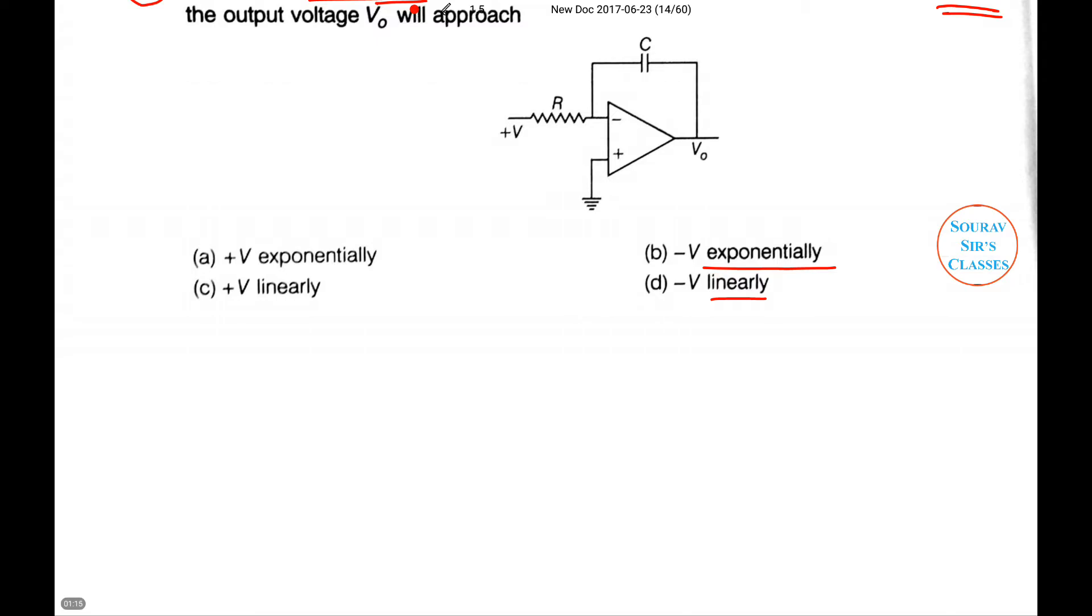The circuit is an integrator, so the output voltage V0 = -1/(RC) × integral of V dt. So V0 = -VT/(RC) + K. Here we can see that V0 varies linearly as given by the expression.